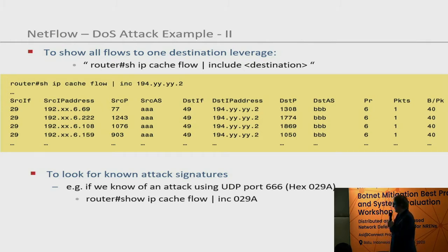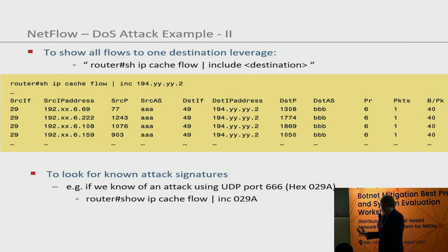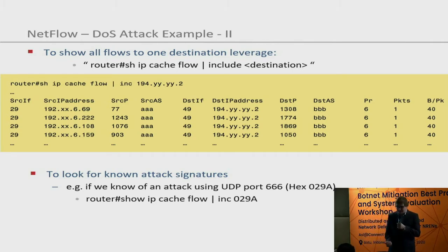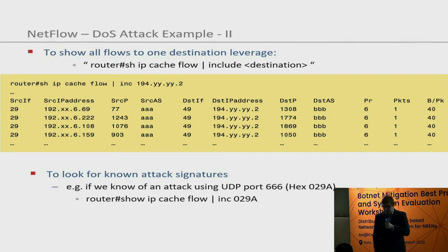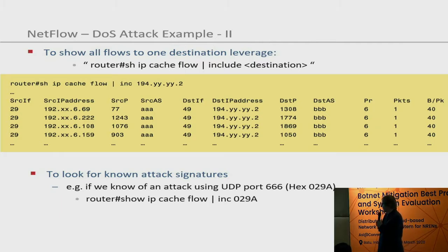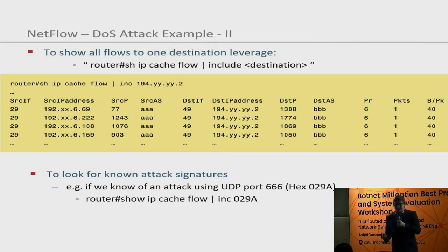You could use this data to look for known attack signatures. For example, if you know there is an attack spreading that uses UDP port 666, you could ask the router to show all flows including that port. But of course there is no automated monitoring yet — that is a very manual way of investigating.